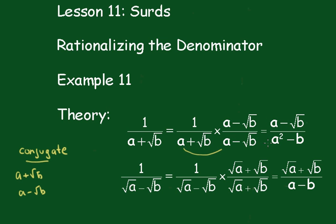the a times the a gives a squared, and the root b by root b is just b, and a root b and minus a root b cancel each other out. So you're just left with a rational denominator.